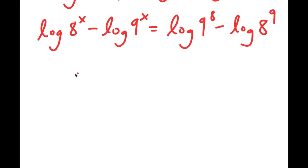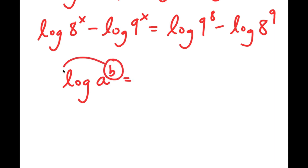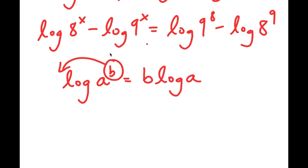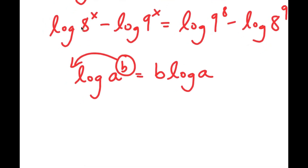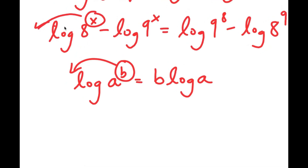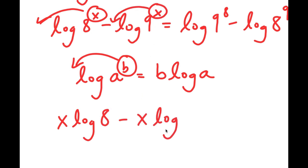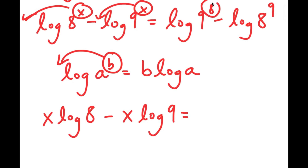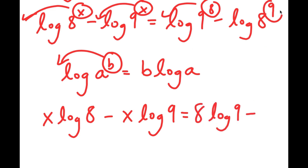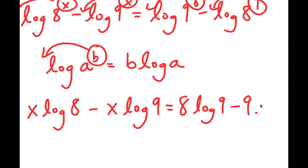Another property of logarithms is that log a to the power of b equals b times log a — I can move the exponent to the front. Using this for all terms: log 8 to the power of x becomes x times log 8, log 9 to the power of x becomes x times log 9, log 9 to the power of 8 becomes 8 times log 9, and log 8 to the power of 9 becomes 9 times log 8.